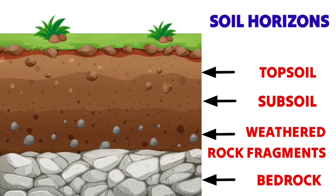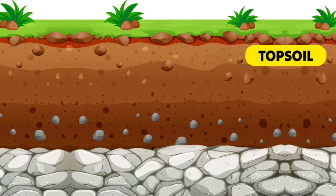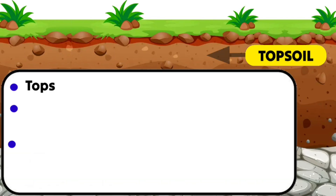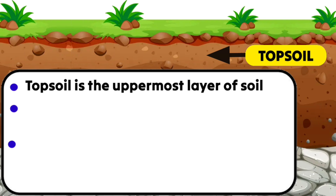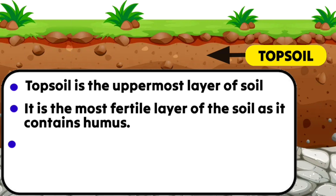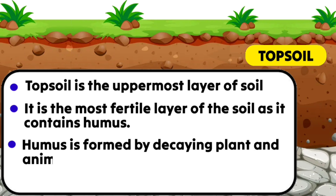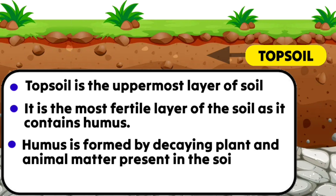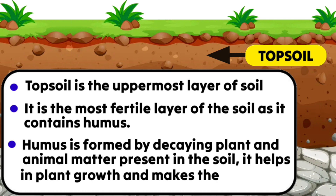Starting with the topsoil — topsoil is the uppermost layer of soil, found on the earth's surface or just below it. It is the most fertile layer of soil as it contains humus. Humus is formed by decaying plant and animal matter present in the soil, and it helps in plant growth and makes the soil fertile.